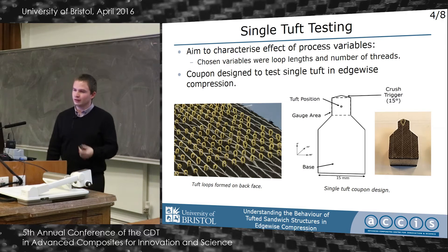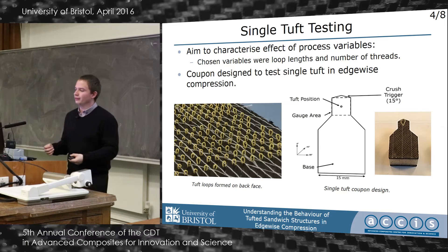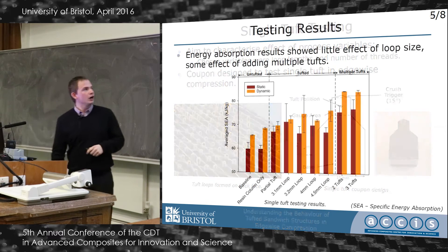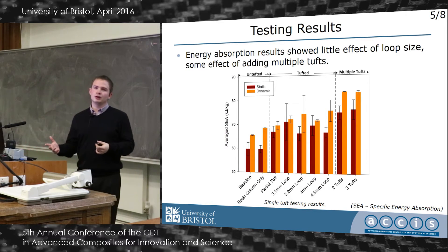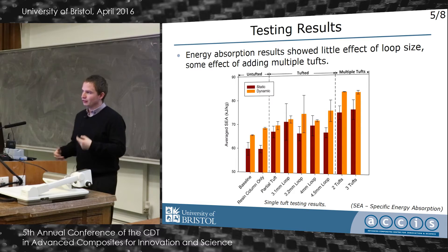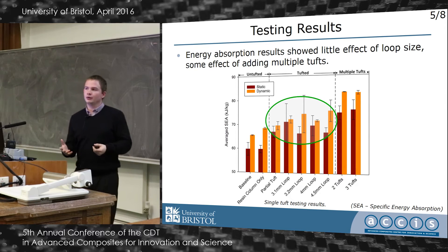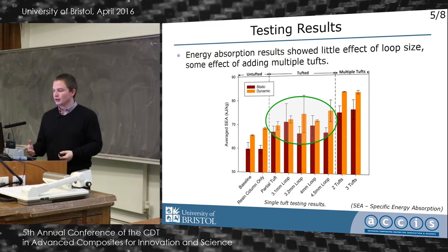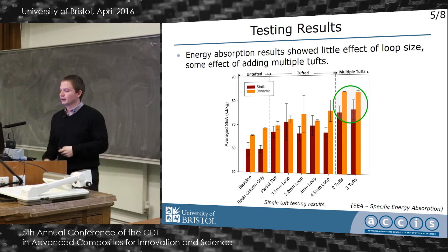The new test method required a new coupon design, shown in the bottom right, and the idea is to isolate a single tuft in edgewise compression and see what effect it's having. Just a quick summary of the results: this graph shows the energy absorption of each of these test coupons under different configurations, both static and dynamic. The two key things to highlight are: first, the tufted coupons show an increase over the baselines on the left; and between varying loop length there's very little effect. But when we start to add multiple threads through the thickness within a single point, we see a much greater increase — this appears to be a more relevant feature than loop length itself.